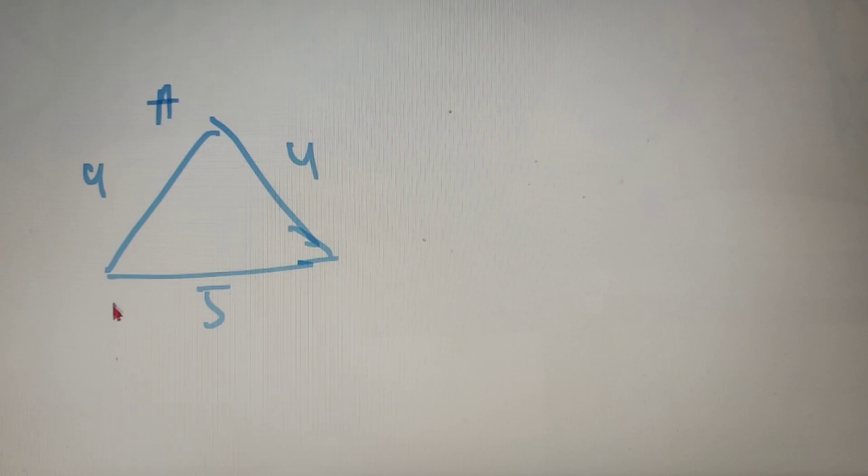So in the question, we are given an isosceles triangle with the equal sides as 4 cm and the base as 5 cm. So we can name the triangle as ABC and we have to calculate the length of the median with respect to the vertex A.